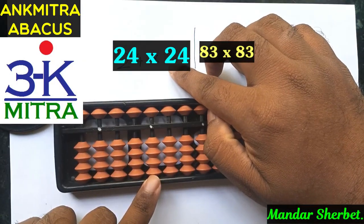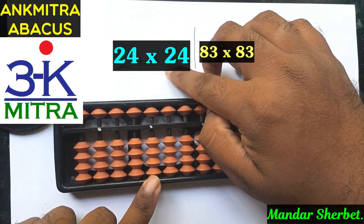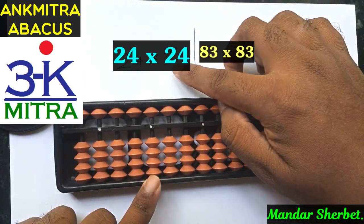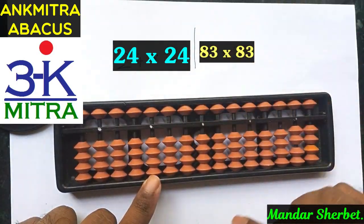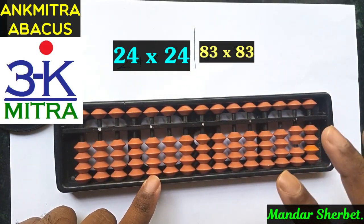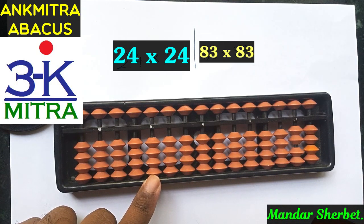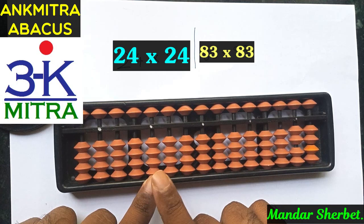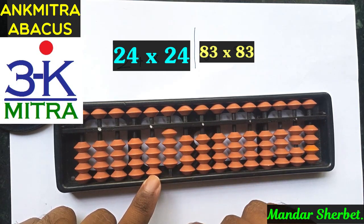In the first step it is 2 multiplied by 2 — the tens place digit multiplied by the tens place digit. So 2 multiplied by 2 is 04. As you all know, we always consider any one-digit answer as a two-digit answer, so 2 multiplied by 2 will be considered as 04. From the fourth rod we start with 04: zero here, four on the next rod.